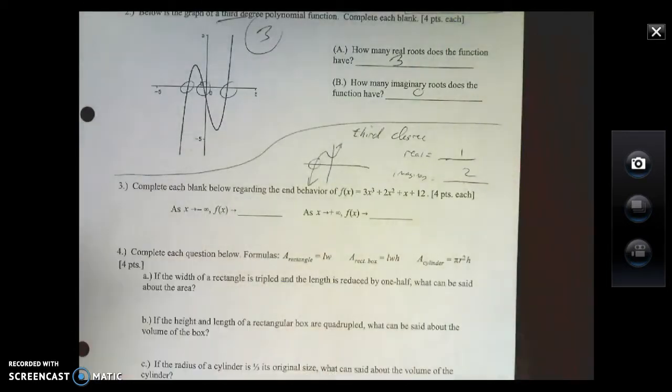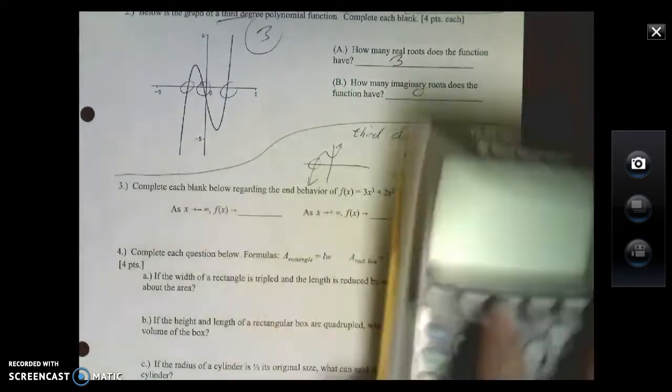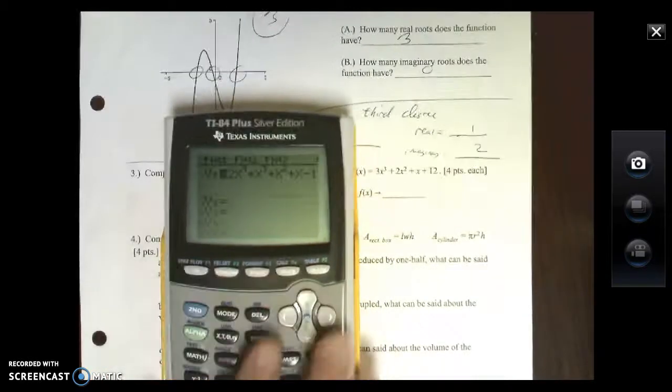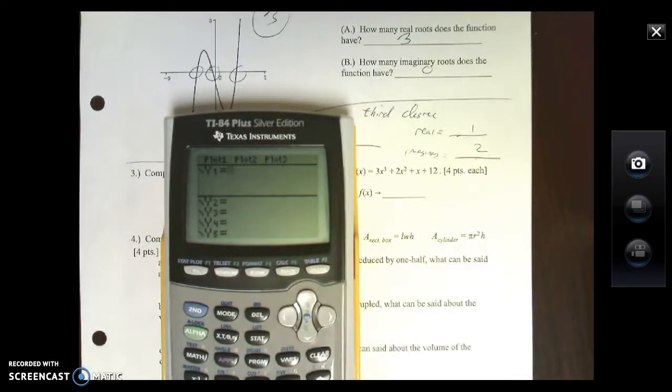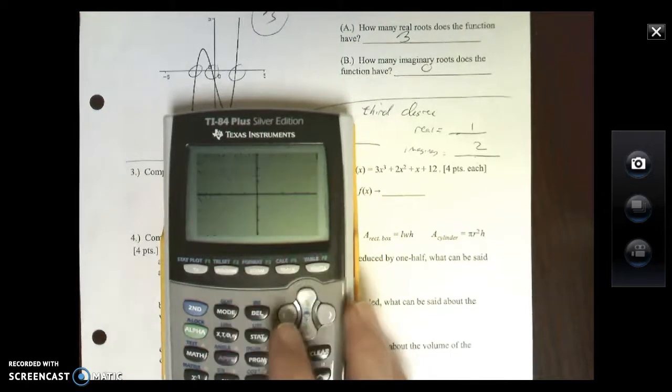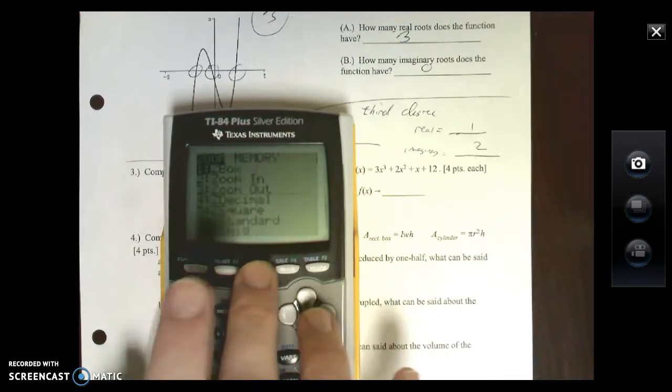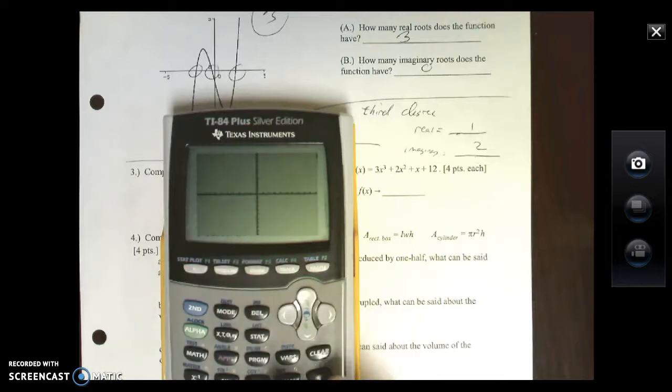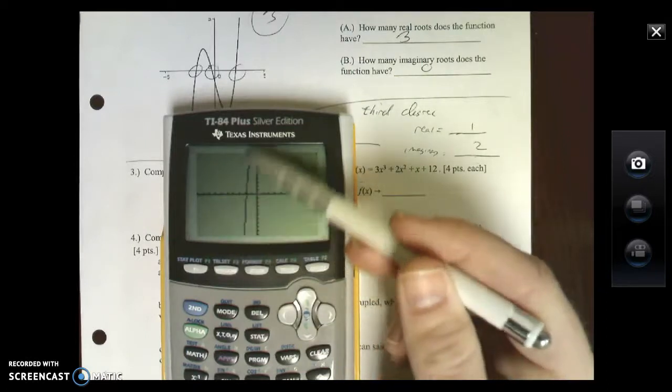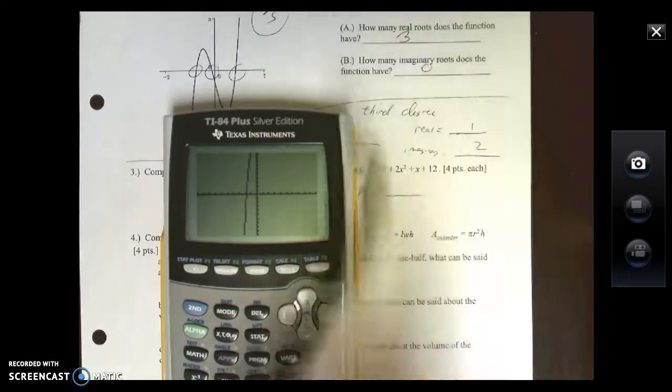Complete each blank below regarding the end behavior. We did end behavior in class and I gave you the two parent functions to memorize, but you guys are allowed to use a graphing calculator. Let's take a look at this. If I type in Y equals 3X to the third plus 2X squared plus X plus 12 and I graph this, this is a cubic function which means it goes like this - it goes up, comes down, curves, and goes all the way up.